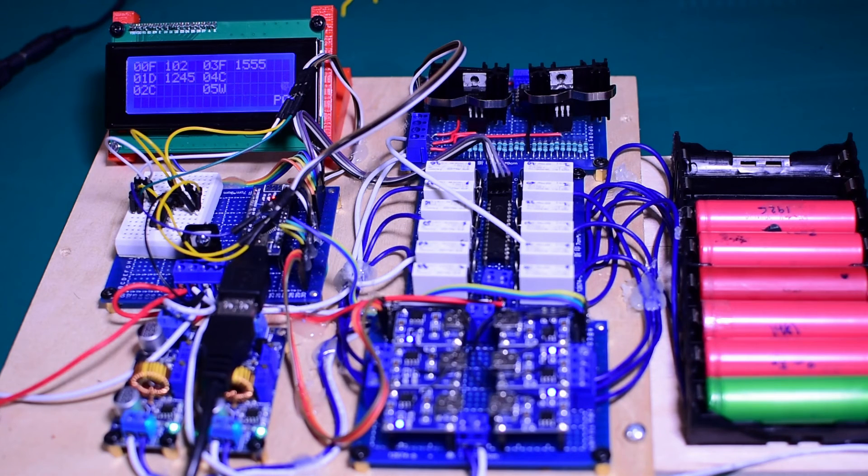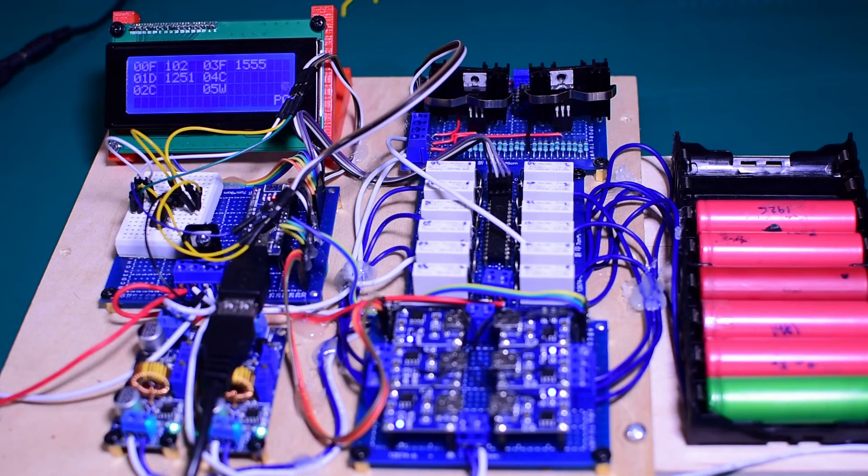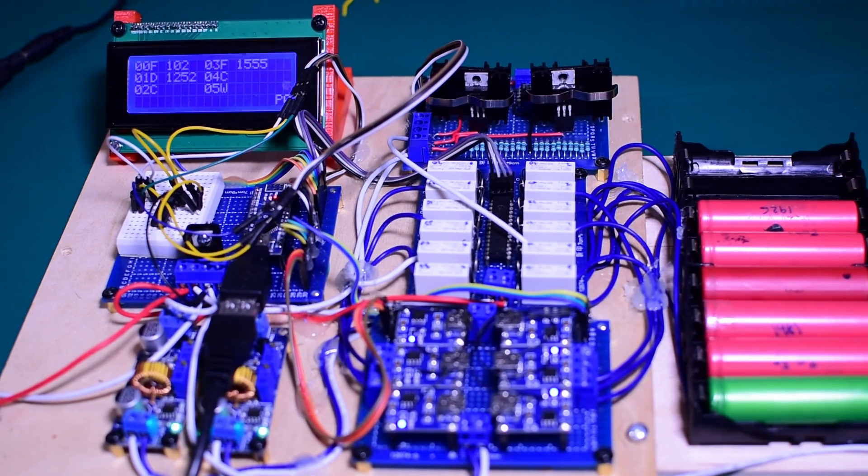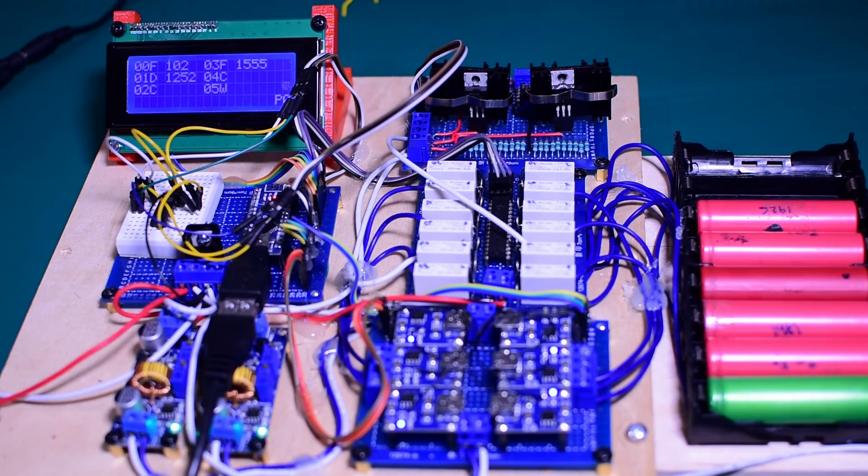So the code is now available online—see the link in video description—and I will be following up with more improvements soon. The next improvements will be the measuring of internal resistance and measuring the temperature of the batteries during charge and discharge to cut those cycles short depending on how hot those batteries get.